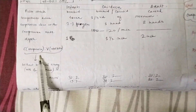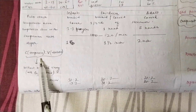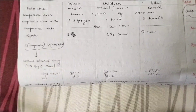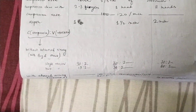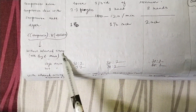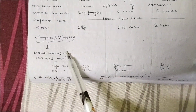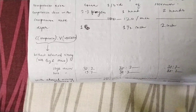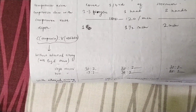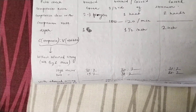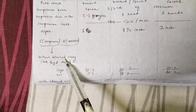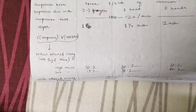With chest compressions, we also have to address airway and breathing. The chest compression to ventilation ratio is very important. You can give ventilation via mouth-to-mouth, bag-mask ventilation, or a ventilator. Mouth-to-mouth and bag-mask are considered non-advanced ventilation. Only if you are using a ventilator is it called advanced airway.